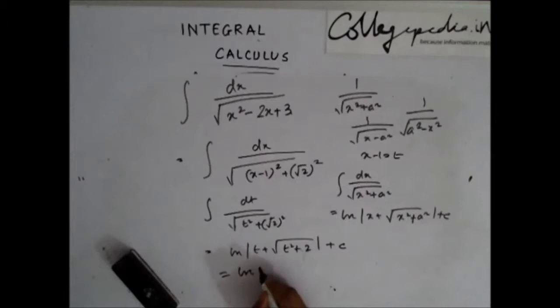Now replace t with x minus 1, x minus 1 whole square plus 2, that is x square minus 2x plus 3 plus c.